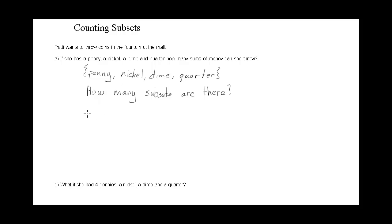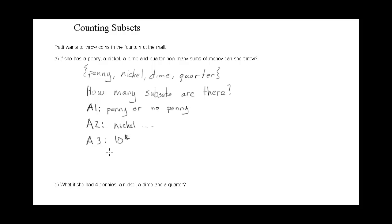In the last video we learned a quick method using the fundamental counting principle. Action one is penny or no penny — throw the penny or don't. She has two options: she can throw the penny or she cannot throw the penny.